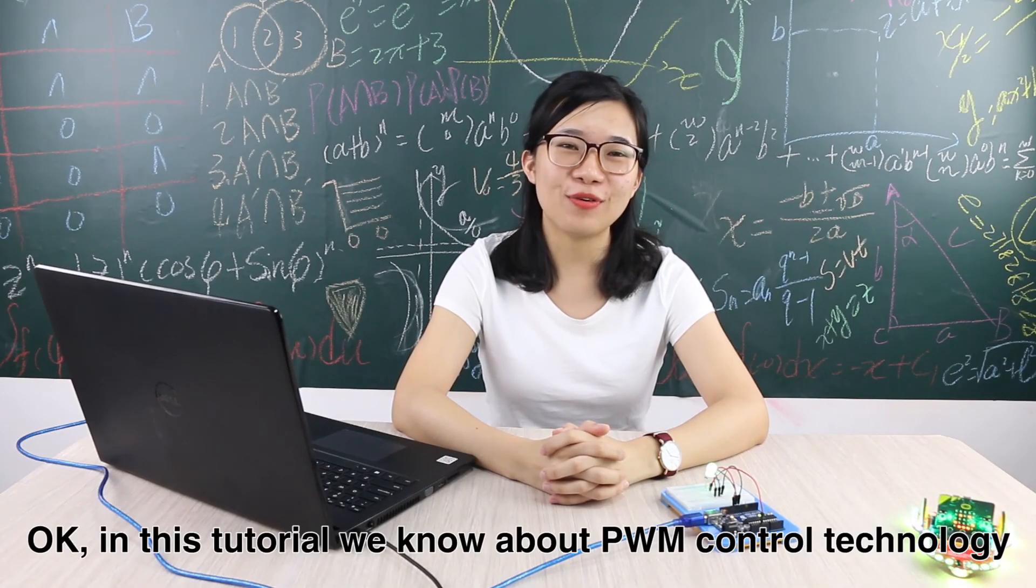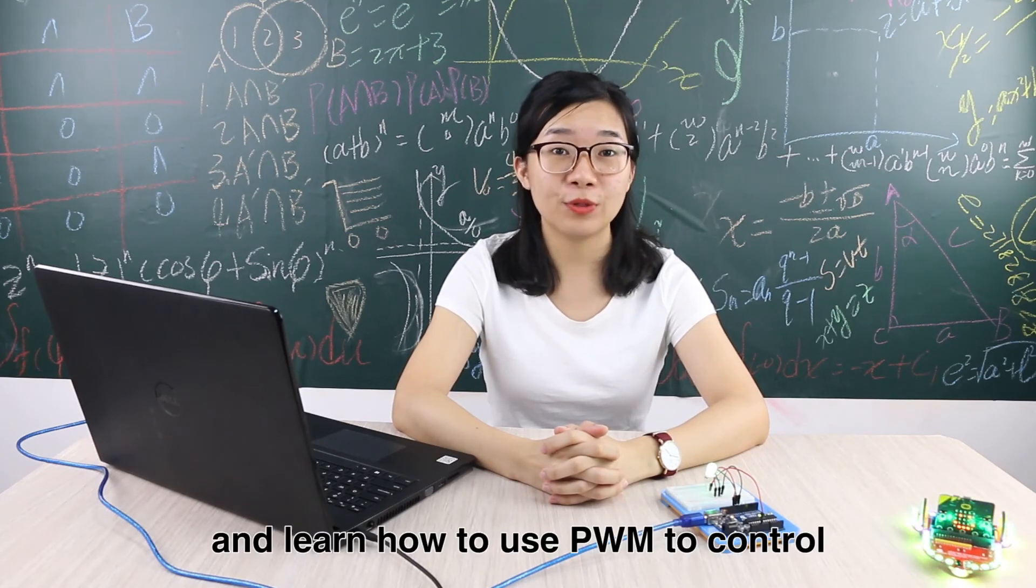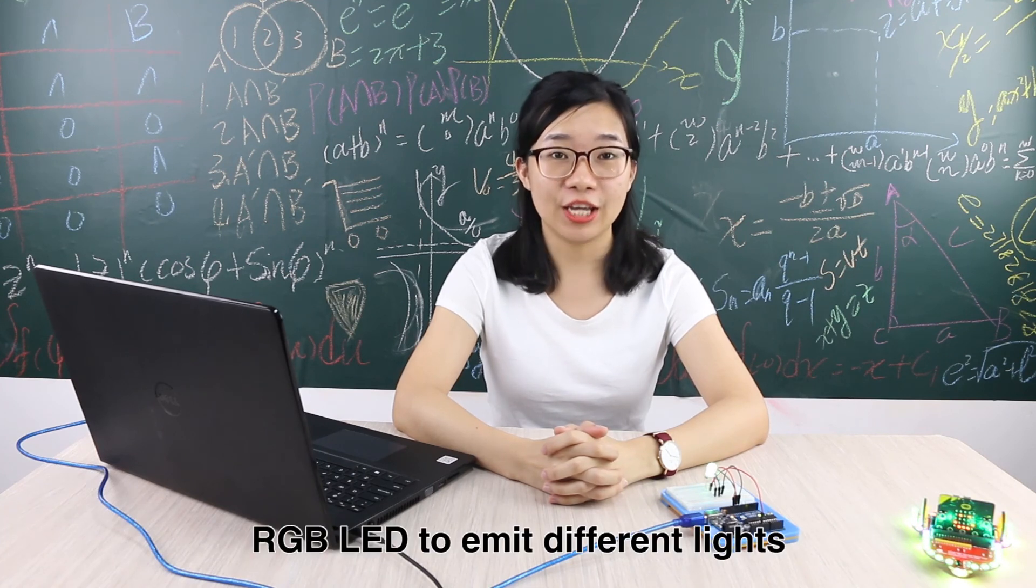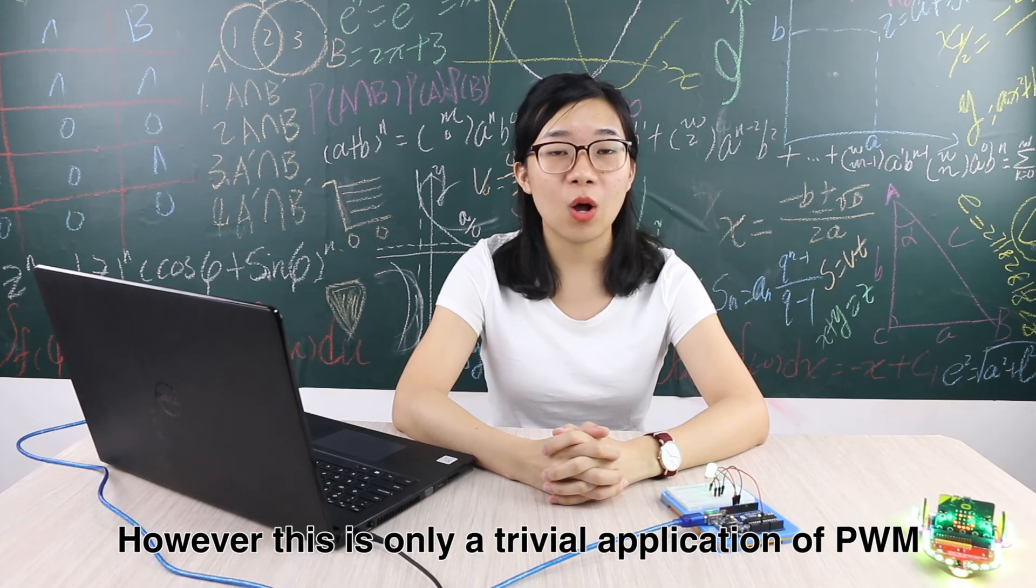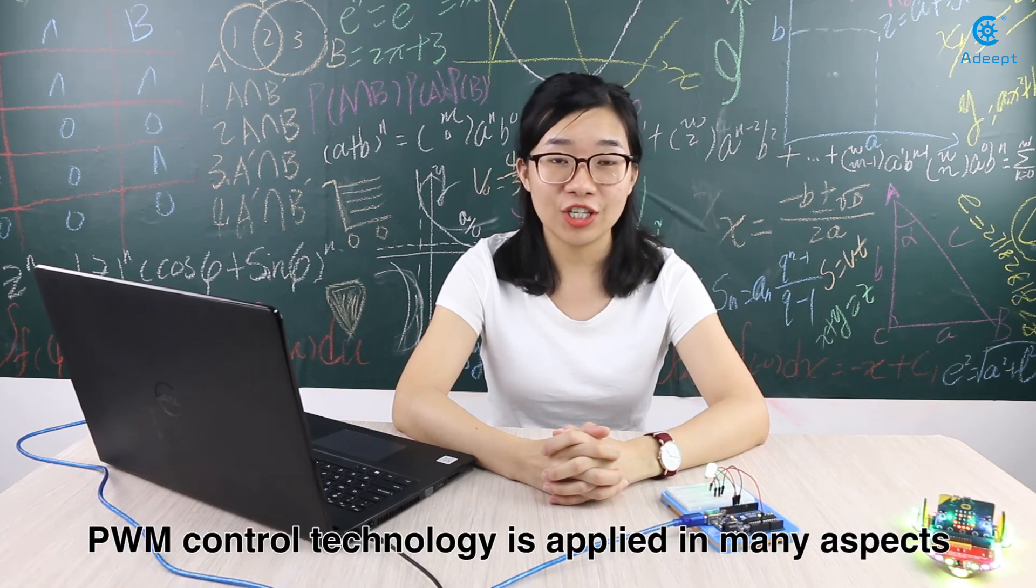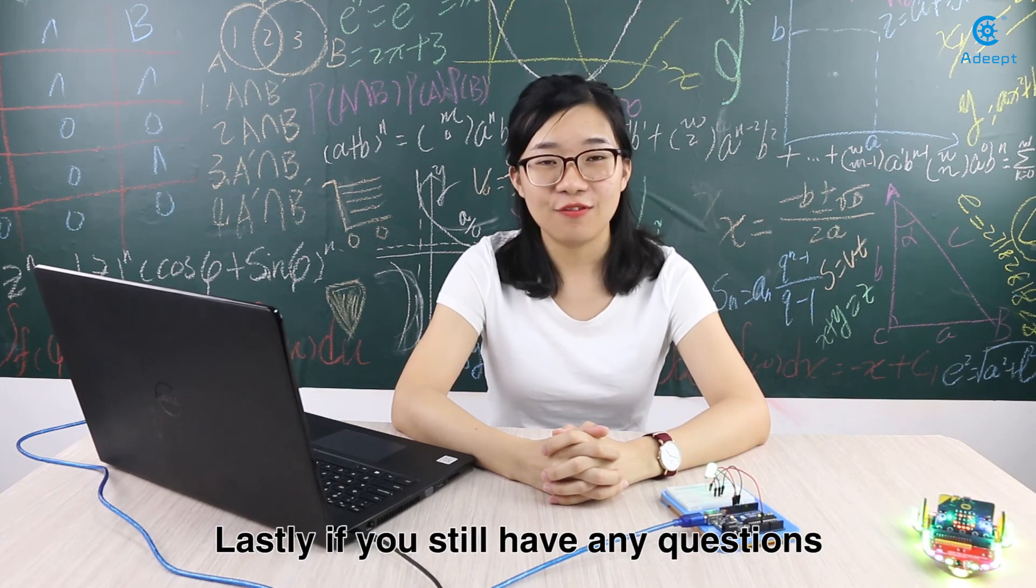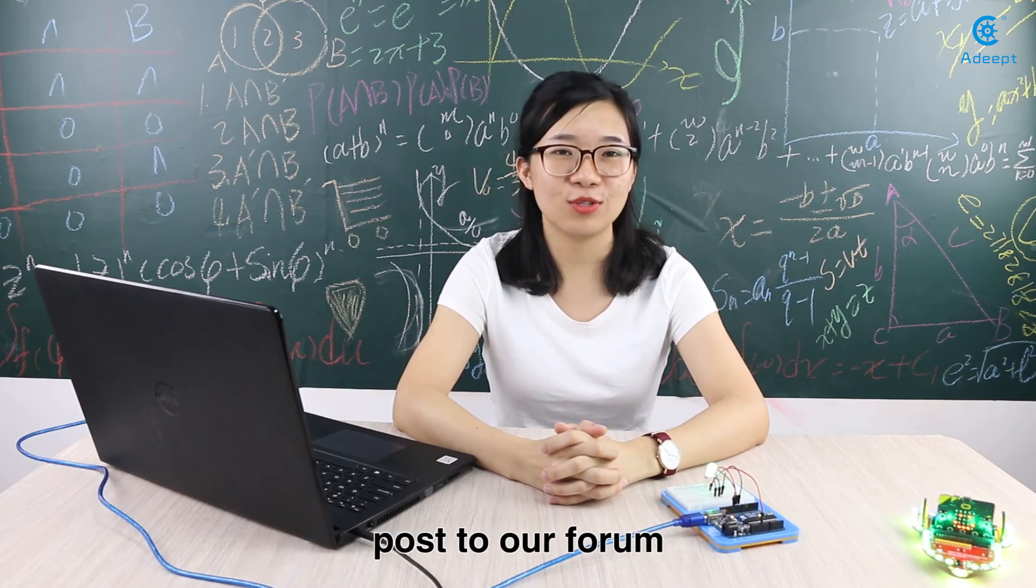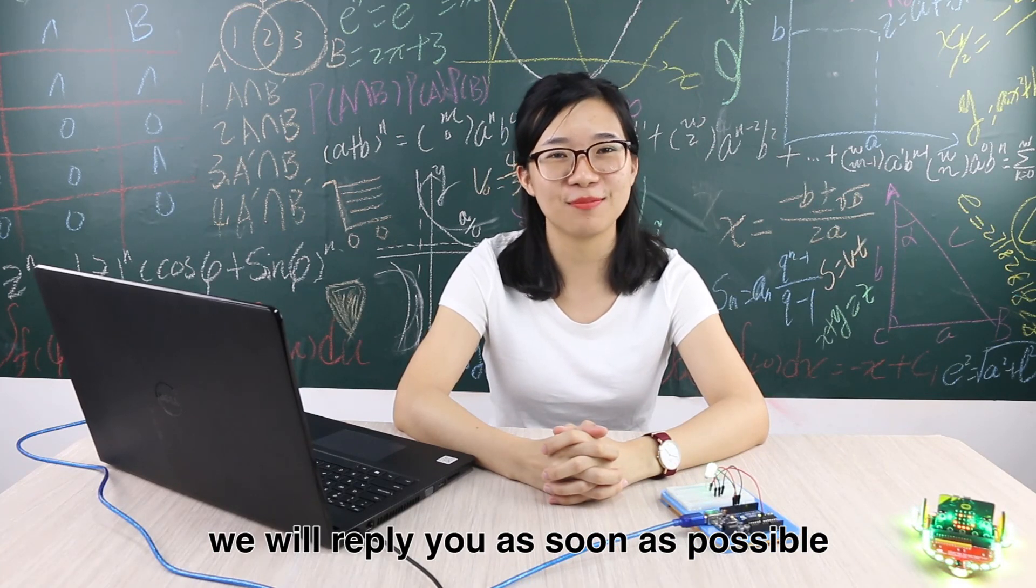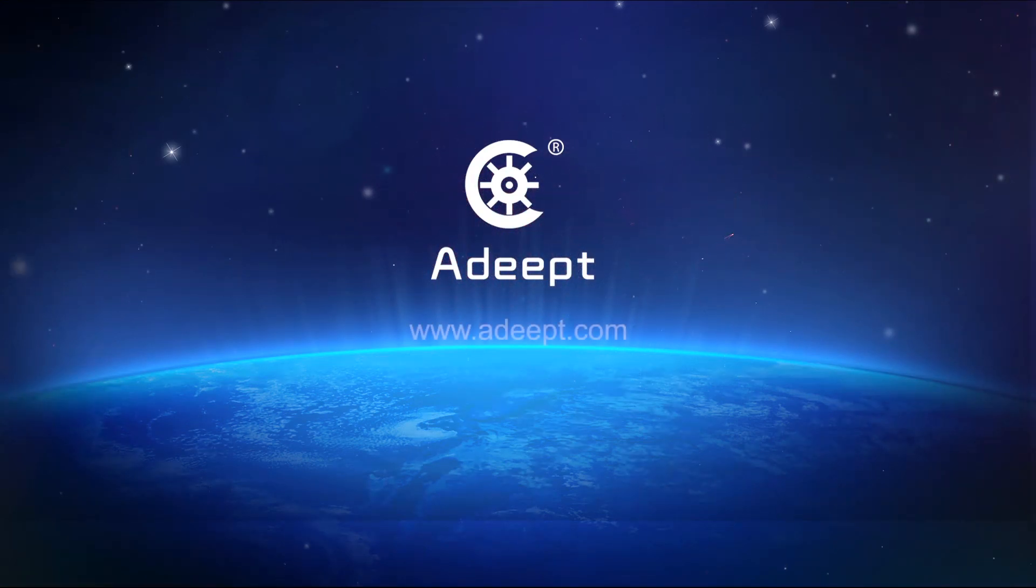Okay, in this tutorial, we learned about PWM control technology and how to use PWM to control RGB LED to emit different lights. However, this is only a trivial application of PWM. In the field of electronic control, PWM control technology is applied in many aspects, such as motor speed regulation and temperature control. Lastly, if you still have any questions, please post to our forum. We will reply to you as soon as possible. See you next time!